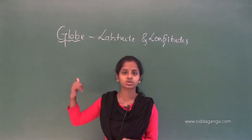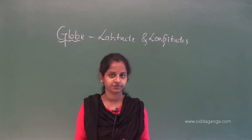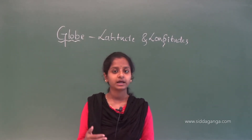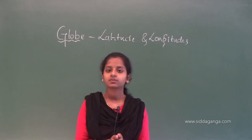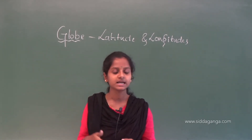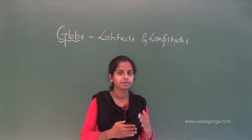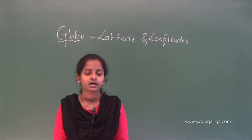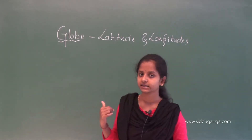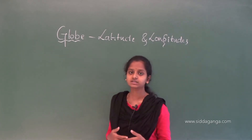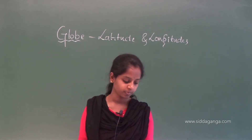In the previous class, we have seen what a globe is. Globe is a miniature of the Earth's surface. We also saw the latitudes — imaginary parallel lines which are parallel to the equator. There are mainly seven important latitudes, and we saw the distribution of heat according to the zones.